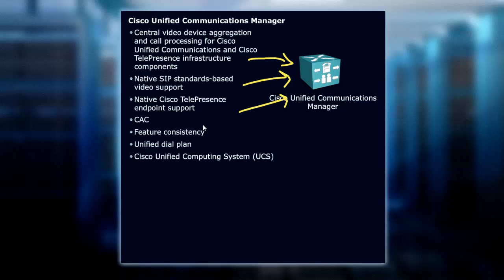Call admission control becomes very important with video and making sure that the video experience is a good one. Because call admission control asks: is there enough bandwidth? If there is, great. If there isn't, what's the alternative? Maybe we don't do video. Maybe we take a different path to support the video — that sort of thing. There are features themselves, all reliant on Communications Manager.